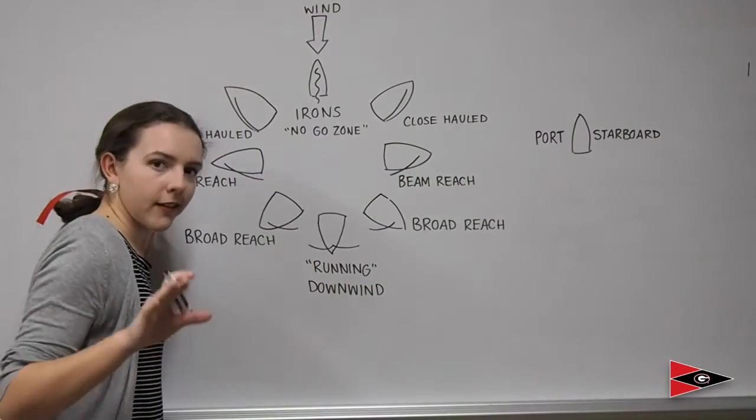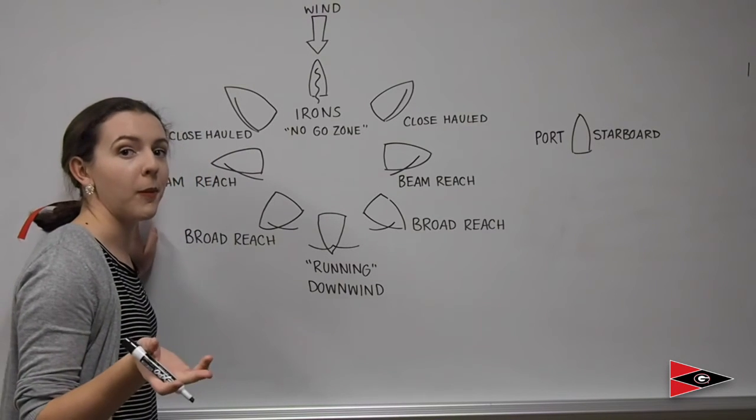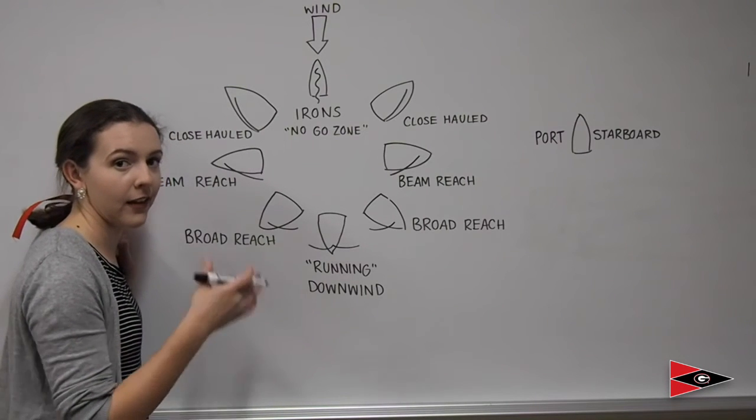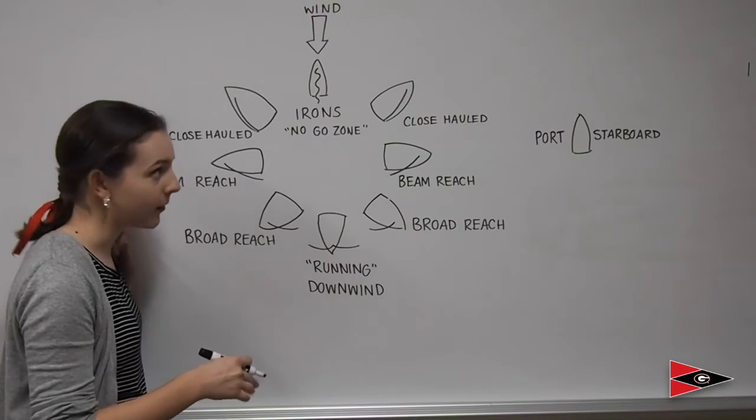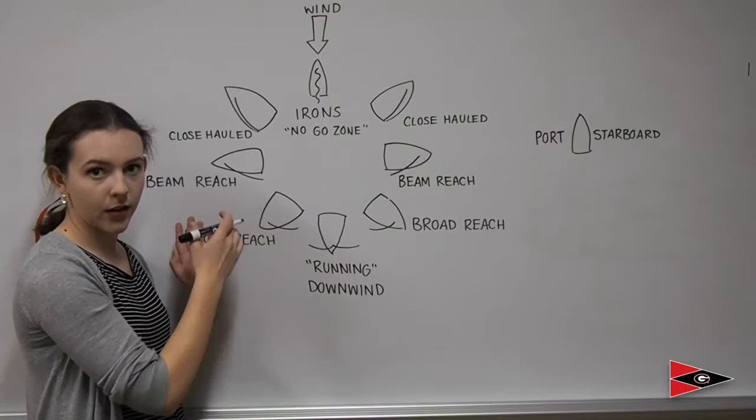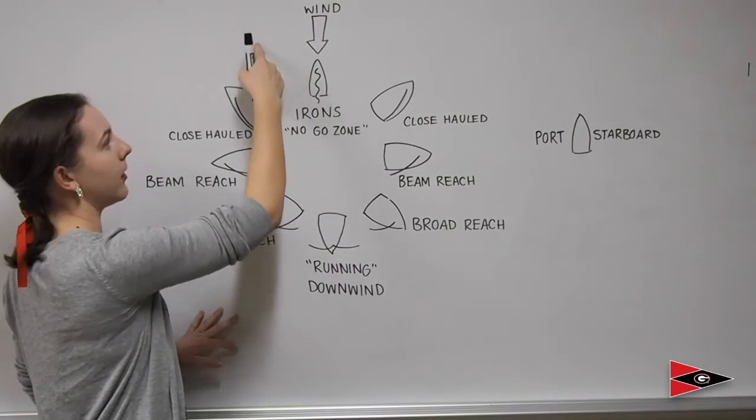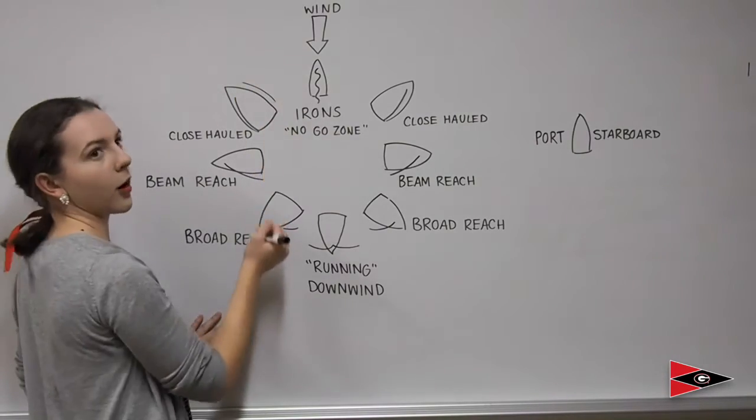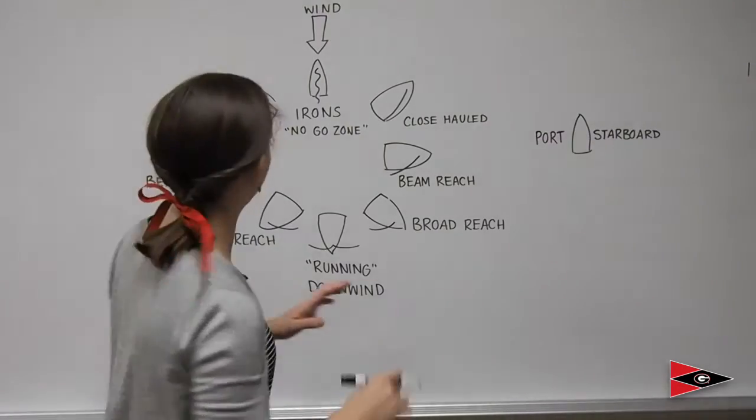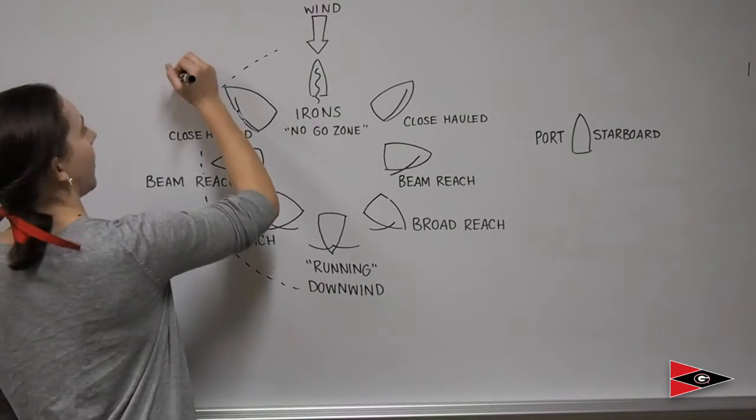A boat is on a starboard tack when the wind is blowing from the starboard side over to the port side and hitting the sail on the port side. So that means that all of these boats on this side of the circle, even though they're on the left side, are going to be on a starboard tack, because the wind coming from here is blowing across the starboard side and hitting the port side. Say that ten times to yourself and it'll stick. So all of these boats are on a starboard tack.